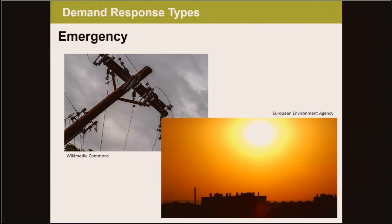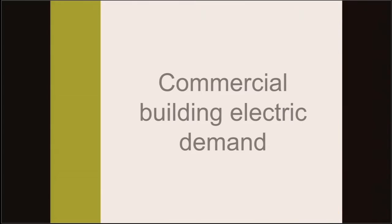A second type of demand response is emergency. It often coincides with the same period as economic examples, such as when it's very hot out. However, it can also be induced by climactic events such as wind, snow, and ice. Building owners and operators agree to reduce their power consumption upon utility requests when the grid is stressed. Recently, smart grid technology has developed to allow utilities to send these signals to customers, often as little as a few hours ahead of time, to reduce their demand for a certain period. Building owners and operators can then choose to reduce their demand in a variety of ways. As an HVAC engineer, I typically think of this as letting temperature set points drift during this period so that the cooling equipment doesn't have to work as hard. But to understand other ways demand can be reduced, we need to understand the ways in which buildings use electricity.